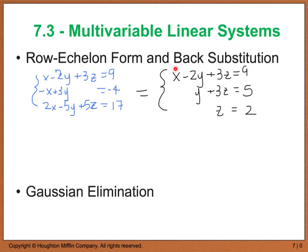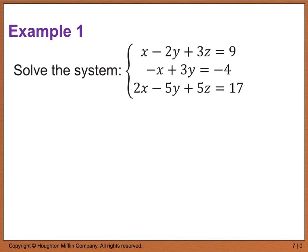When we take the step of back-substituting, this is called the Gaussian elimination method. For example 1, we want to solve the system of three equations with three unknowns: x minus 2y plus 3z equals 9, negative x plus 3y equals negative 4, and 2x minus 5y plus 5z equals 17.